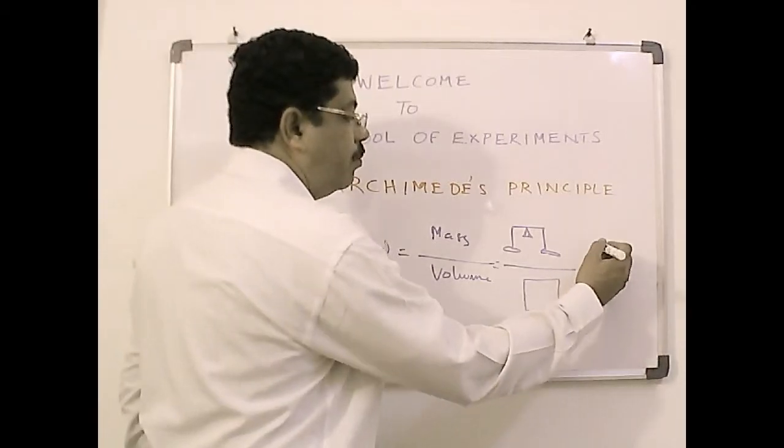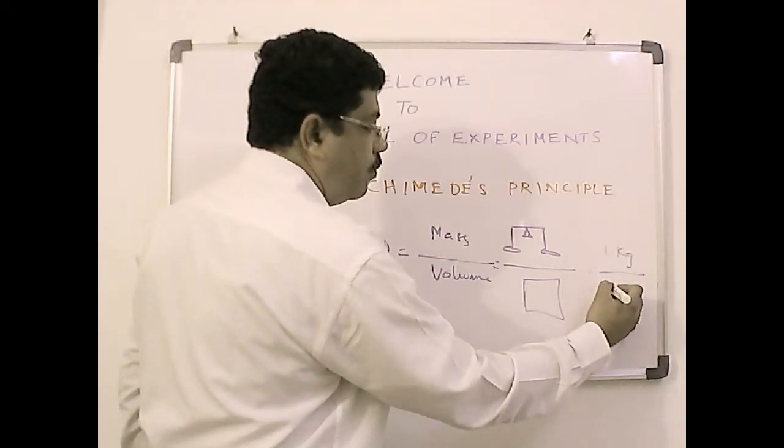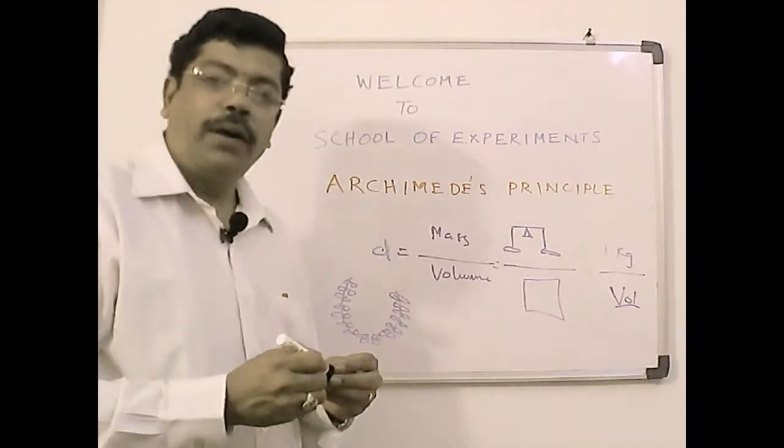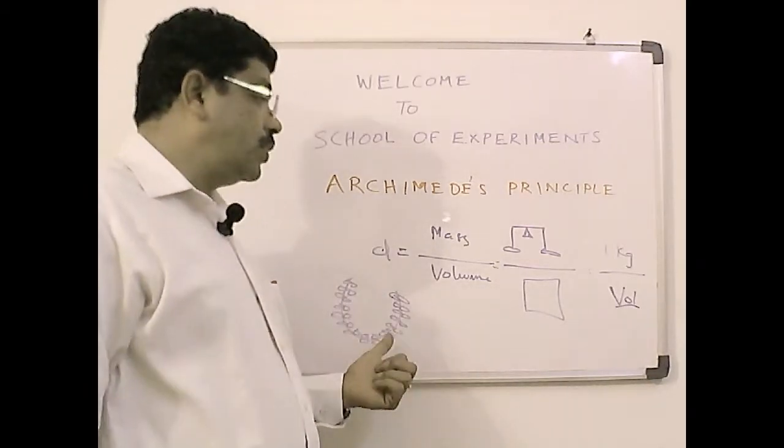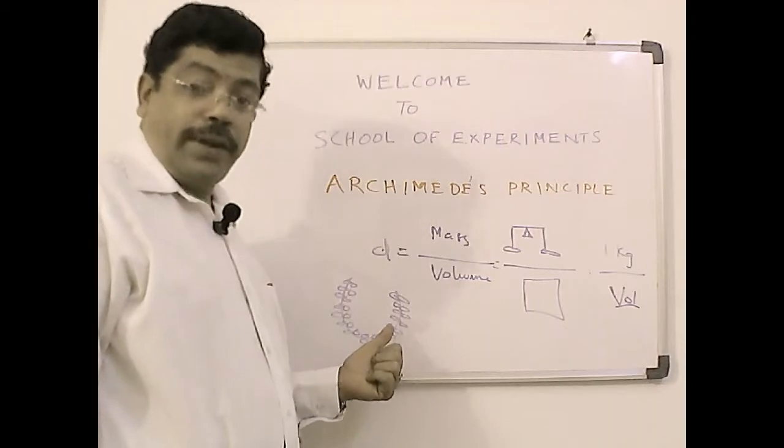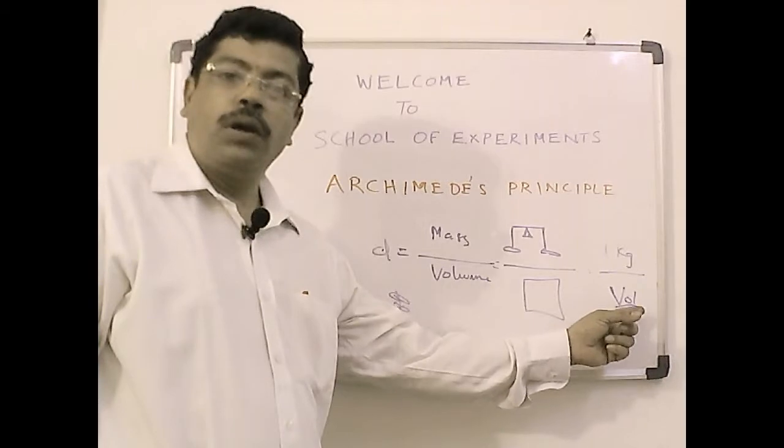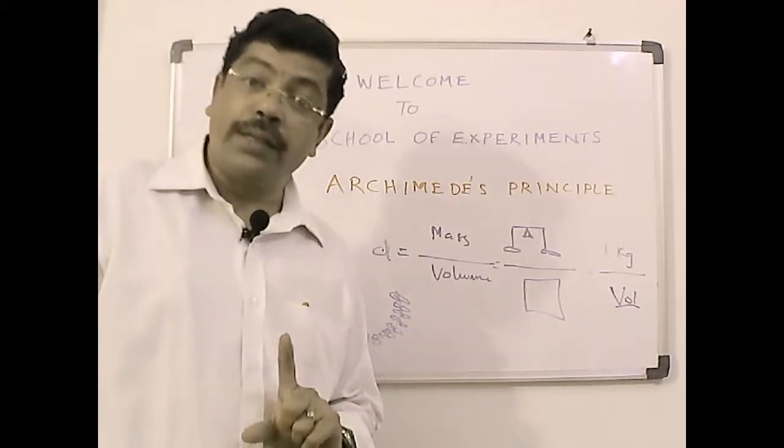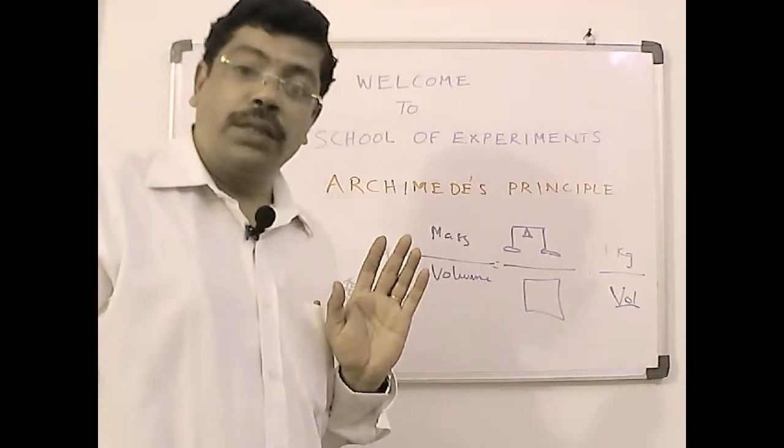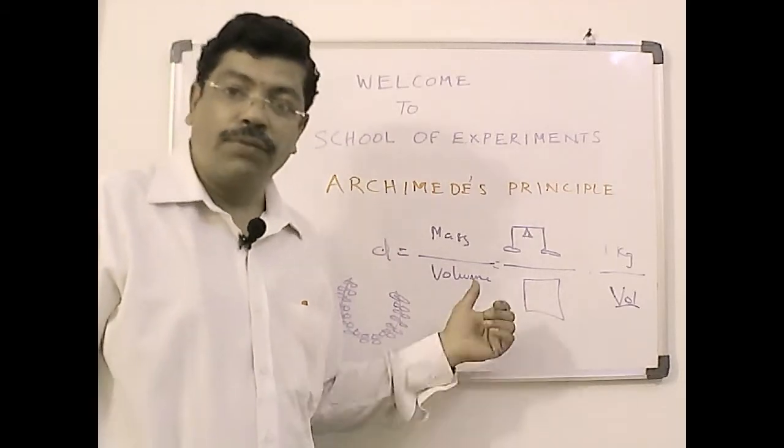Mass we know, maybe it is 1 kg, and by volume we need to find out which is equal to density. So what happened now is if we know the volume of pure gold, if this crown is made up of really pure gold, then whatever volume occupied by pure gold and volume occupied by the crown should be one and the same. If not, the goldsmith cheated the king. That was the conclusion of Archimedes.